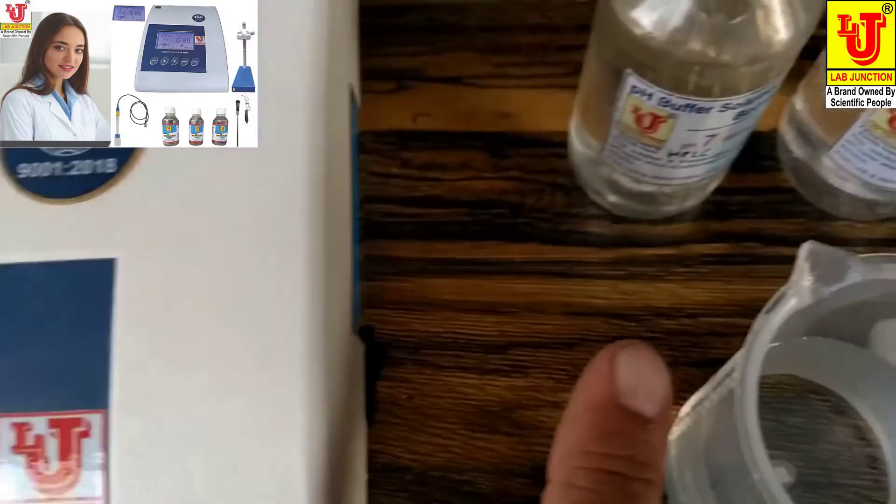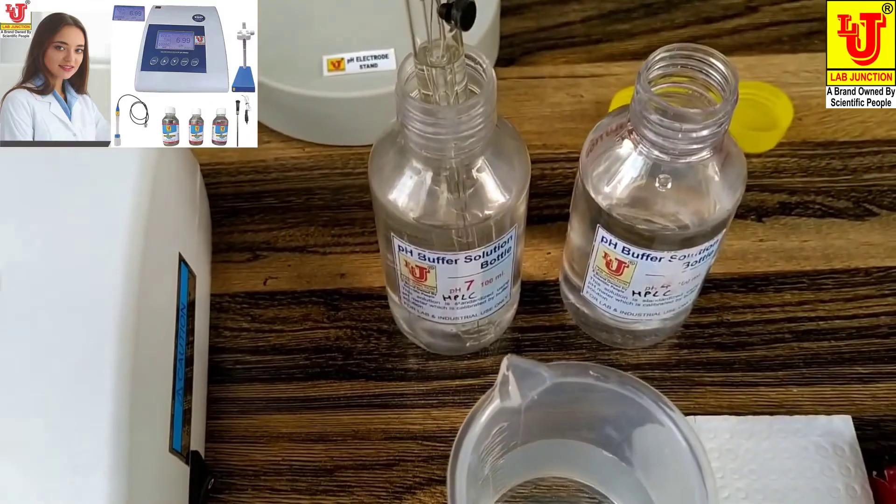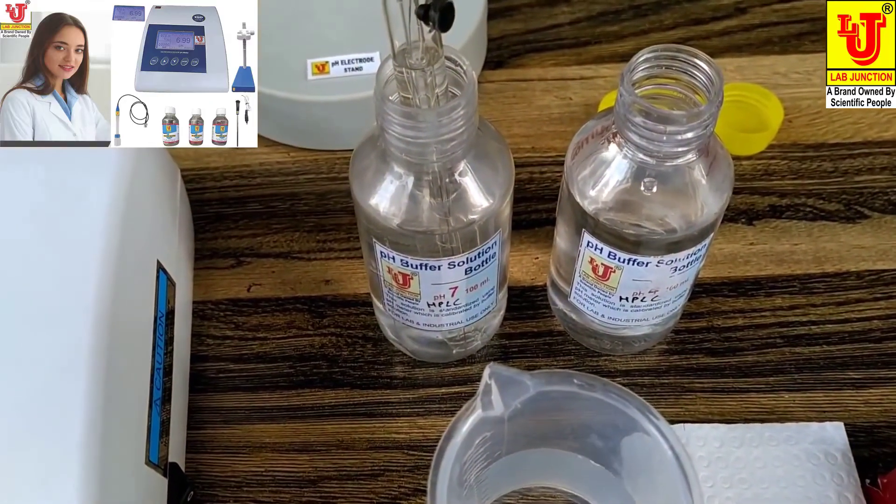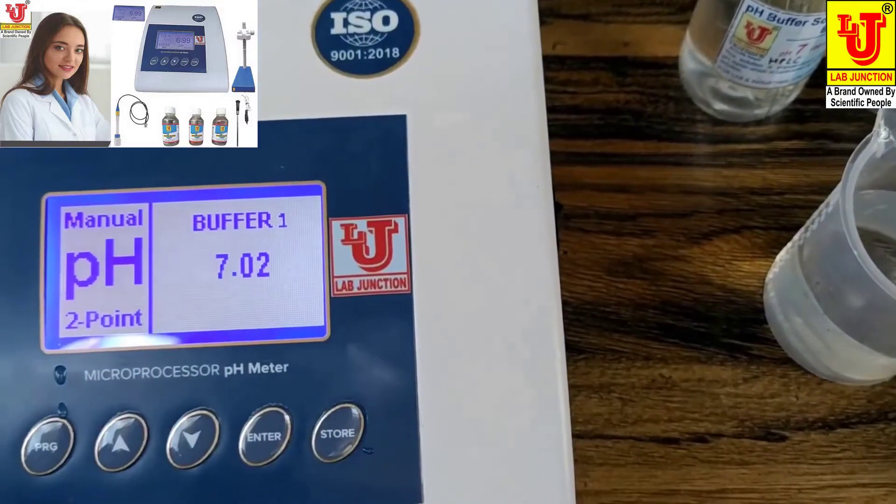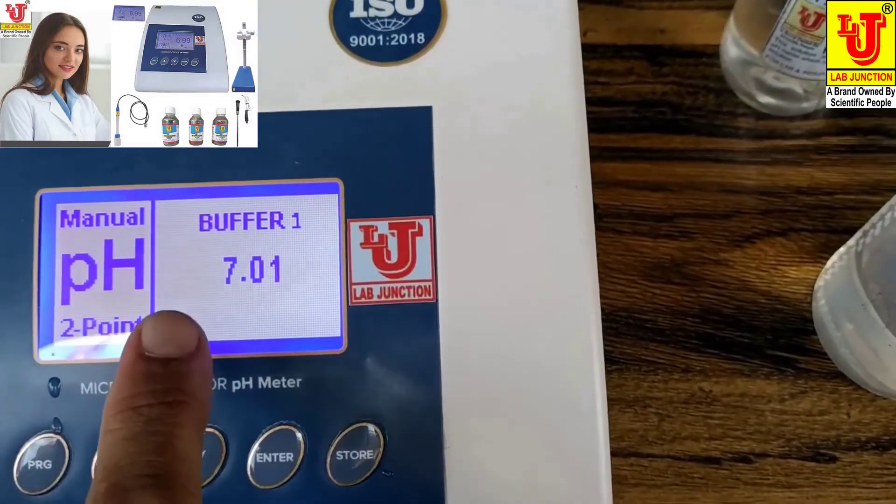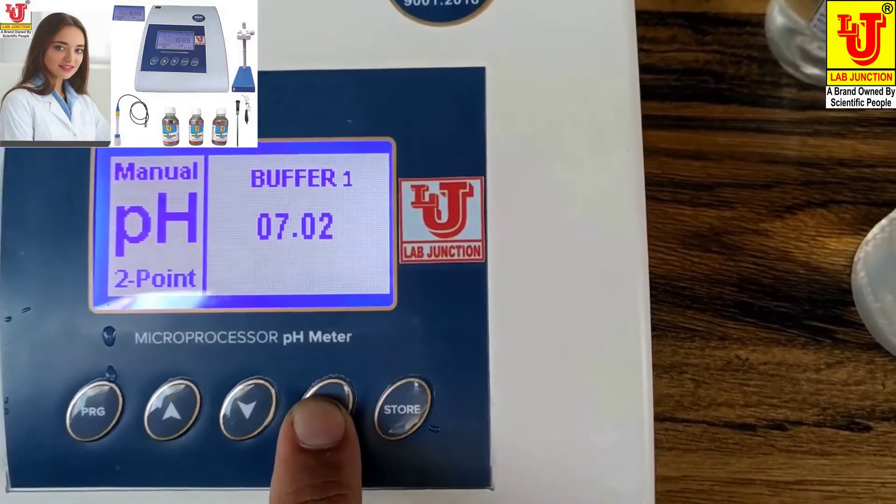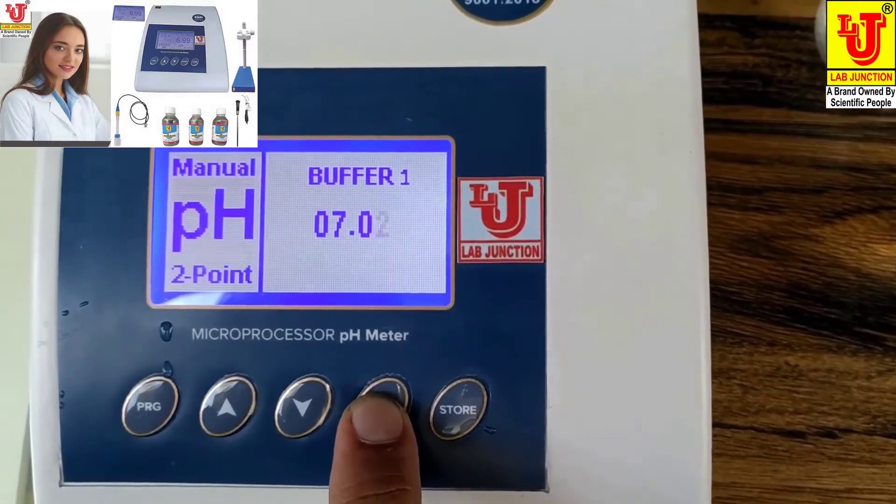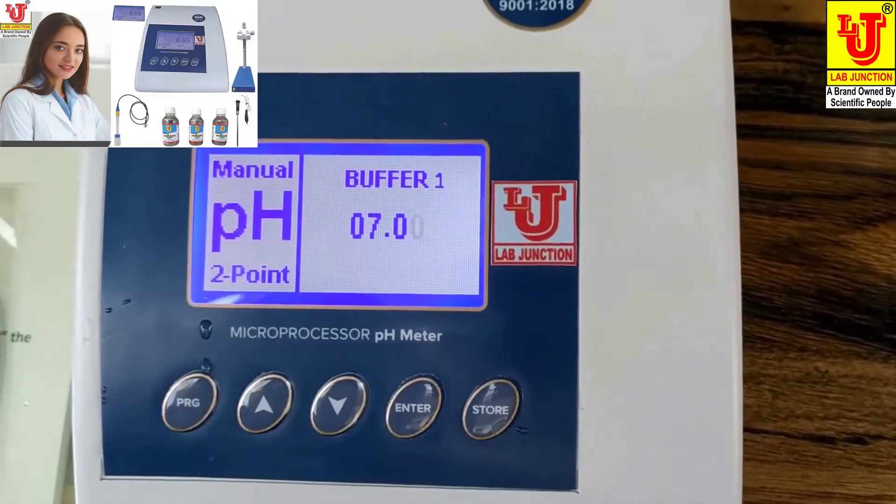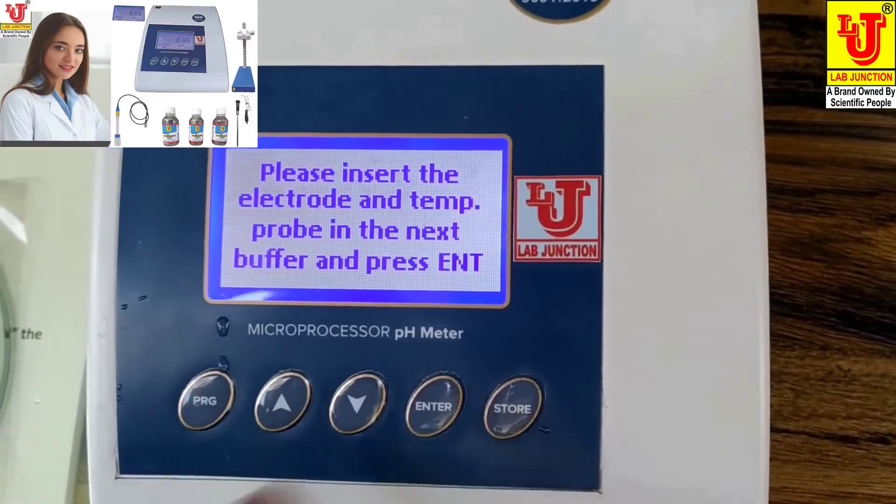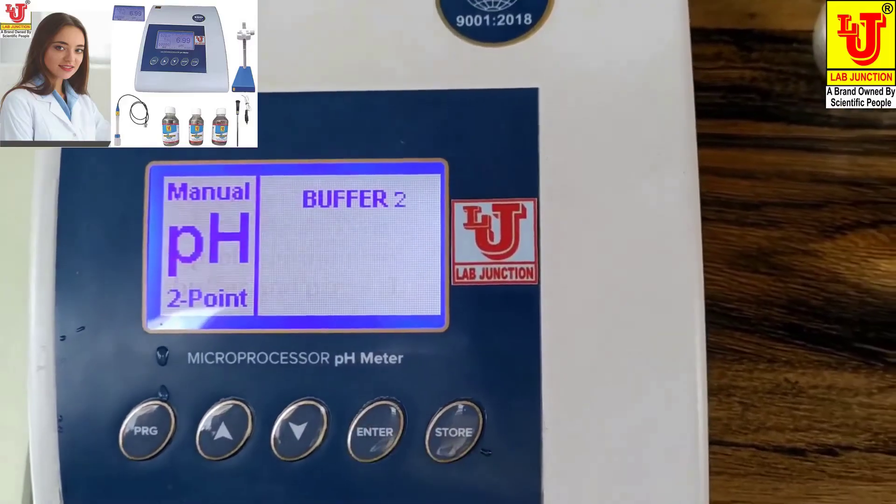Suppose this is 7.00 buffer, two-point. You want to feed your own value. Suppose this is zero, you go to next range. You set, suppose you want to 7.00, and press enter. 7 is calibrated. Now you go to buffer 2.